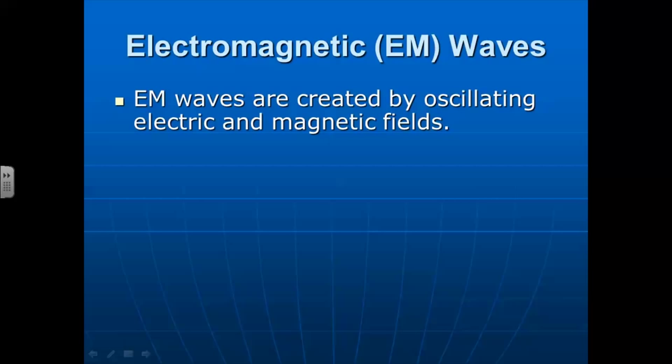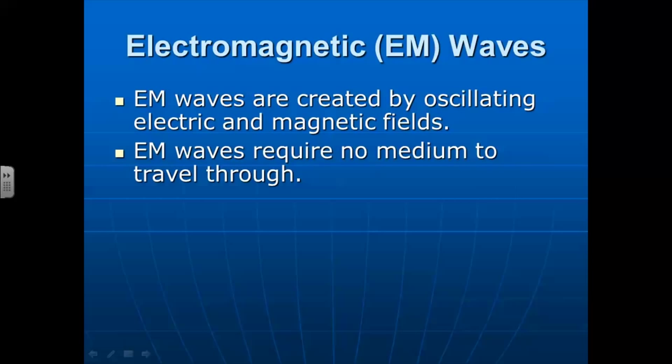EM waves are created by oscillating electric and magnetic fields. So think of electric fields as being like when you take a balloon and you rub it on your head and stick it to the wall. The reason why that balloon sticks to the wall is because of those electric fields that's created by rubbing that balloon and stripping the electrons. And then the magnetic field is what causes a magnet to stick onto a refrigerator.